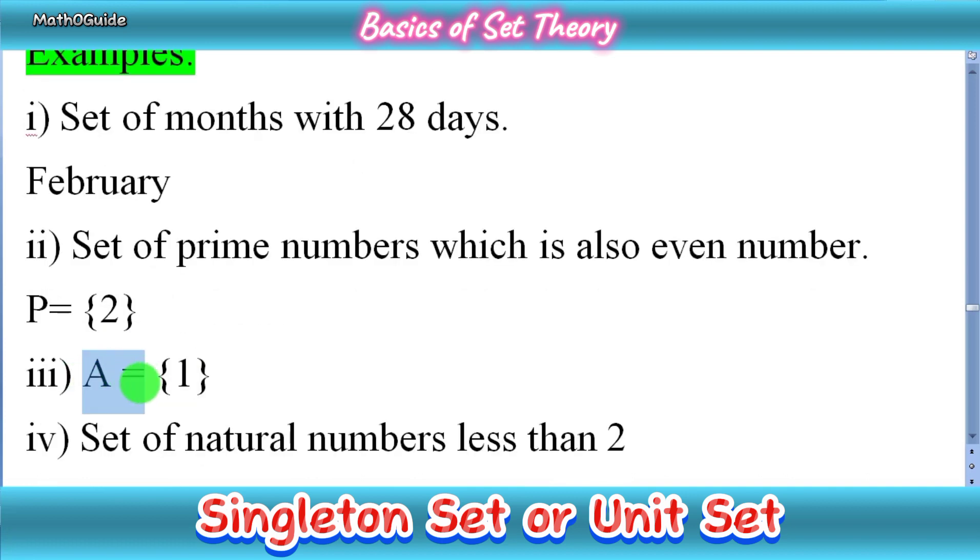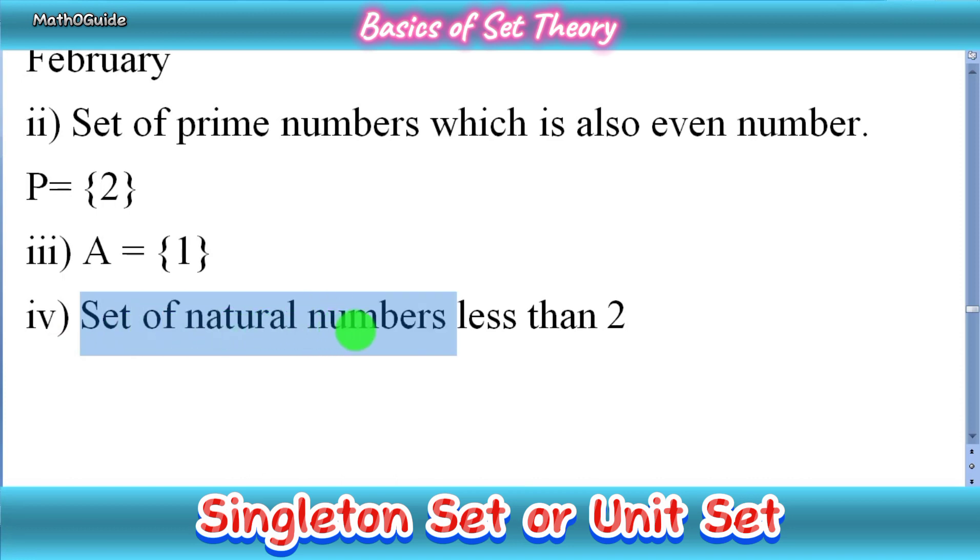In the next example, we have a very simple set which has only one element, that is one: A = {1}. You can see more examples, for instance, the set of natural numbers less than two. Natural numbers start from one, and we have only one natural number less than two, which is one itself.